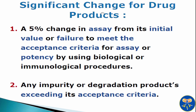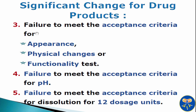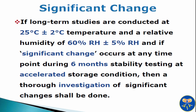Now we will discuss significant change in case of drug products. First criteria is a 5% change in assay from its initial value or failure to meet the acceptance criteria for assay or potency by using biological or immunological procedures. Second criteria is any impurity or degradation products exceeding its specification criteria. Third one is failure to meet the acceptance criteria for appearance, physical changes or functionality test. Fourth criteria is failure to meet the acceptance criteria for pH. And fifth one is failure to meet the acceptance criteria for dissolution for 12 dosage units. All these criteria are considered as a significant change for drug products.